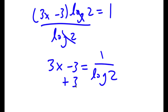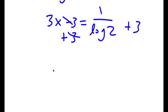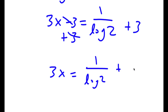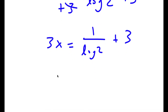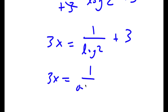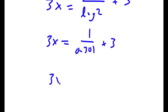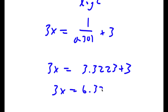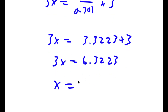Now if I add 3 to both sides, these cancel out and I get 3x is equal to 1 over log 2 plus 3. And 1 over log 2 is the same thing as 1 over 0.301 plus 3, which equals 3.3223 plus 3. So I have 3x equal to 6.3223, meaning x is equal to 2.1074.